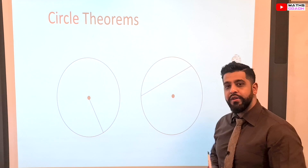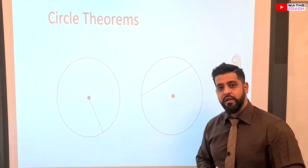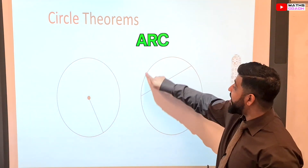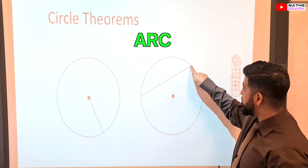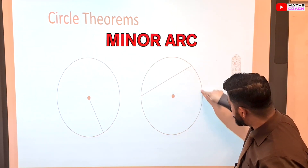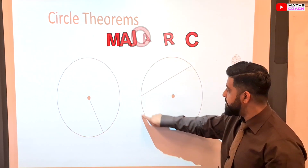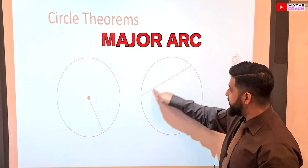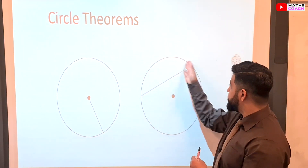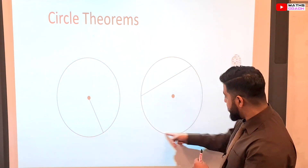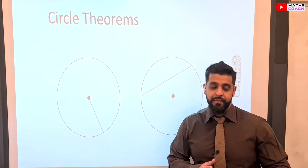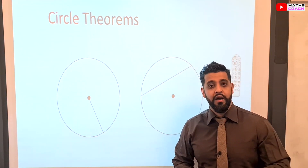I will be referring to these parts of a circle, and I may also refer to the arc of a circle. Here this is called a minor arc and this will be called a major arc, because a chord has separated the circumference into two parts. So minor and major arcs are formed.